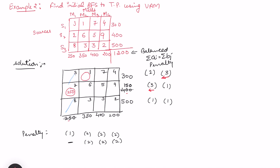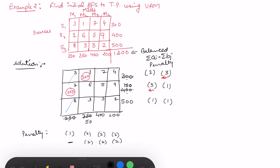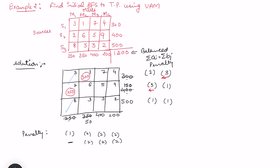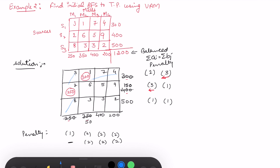In the first row, the least cost is 1, so I allocate there. The quantity is the minimum of 300 and 350, so 300 goes here. Once 300 is allocated, the first row supply of 300 is exhausted, and the remaining demand at that destination is 50. This also exhausts the first row entries, so we repeat the process again.